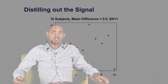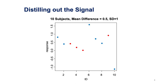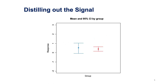Here is an example. We have 10 subjects. The mean difference between the two groups, the red and the blue, is 0.5, and the standard deviation is 1. When we take the mean and the 95% confidence interval of the two groups, we can see that the means are very close to each other, and there is really no difference from this example that we can test. When we take the means and 95% confidence intervals of each of the groups, we can see there is really not much difference in the means. But that may be just a reflection of the sample size.